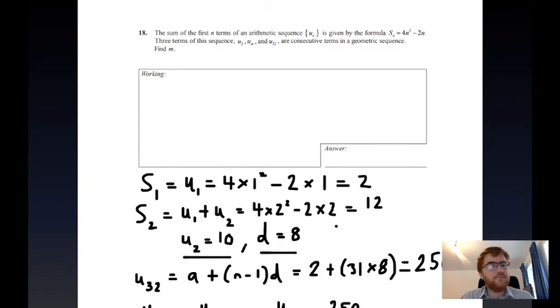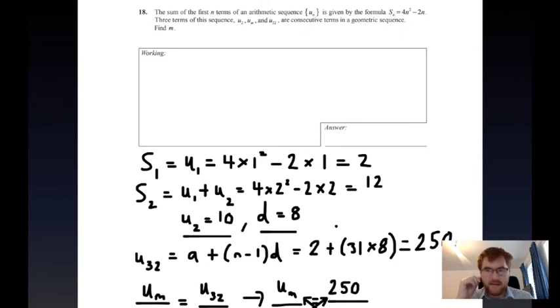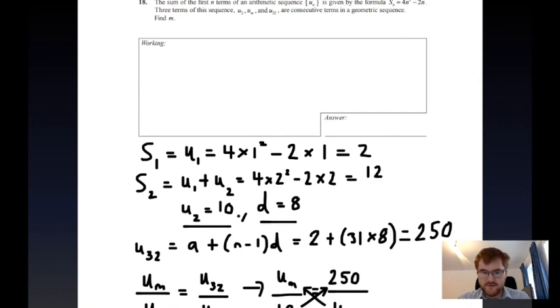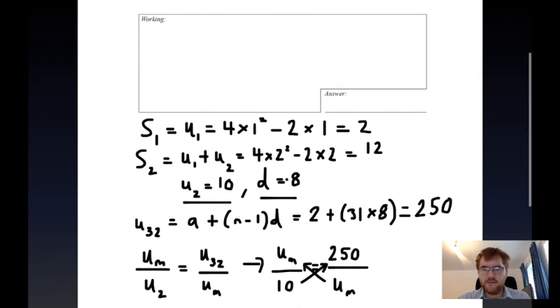That was a pretty quick explanation of the question, so just go through the steps very quickly. We use the sum formula to work out the first and second term, because we know the sum of the first two terms is just the first and second term added together. We can then work out the common difference as well, which is very useful for later on. We work out the 32nd term by using the common difference and the first term, giving us 250.